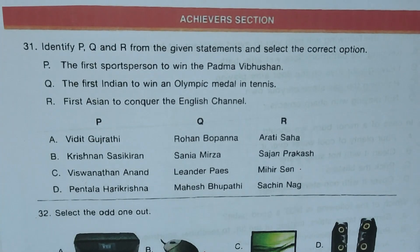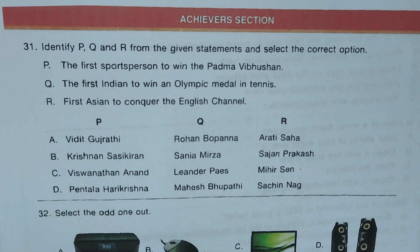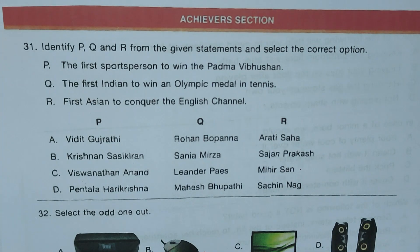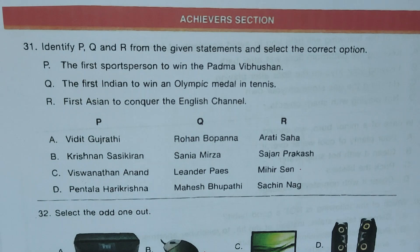Achievers section. Question 31: Identify P, Q, and R. P is the first sportsperson to win the Padma award, Q is the first Indian to win an Olympic medal in tennis, and R is the first Asian to conquer the English Channel. The correct answer is C: P is Viswanathan Anand, Q is Leander Paes, and R is Mihir Sen.